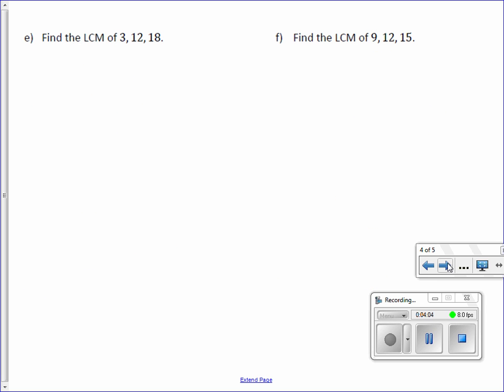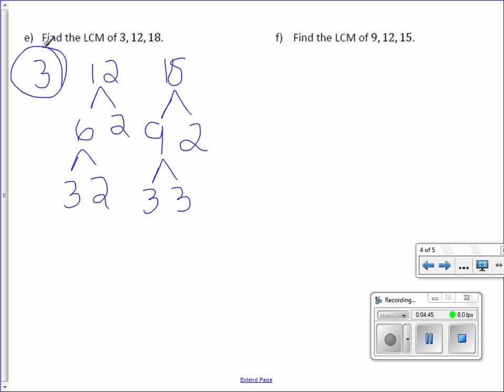Letter E, find the LCM of 3, 12, and 18. We're going to start the same way and do our factor trees for all 3 numbers. 3 is a prime number. 12 can be broken down into 6 and 2. 6 can be broken down into 3 and 2. 18 can be broken down into 9 times 2. And 9 is 3 times 3. It looks like they all have a 3 in common.